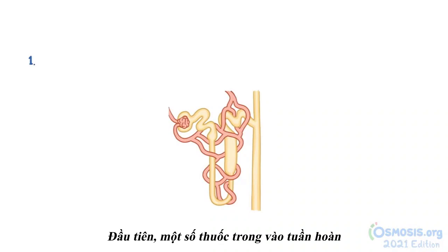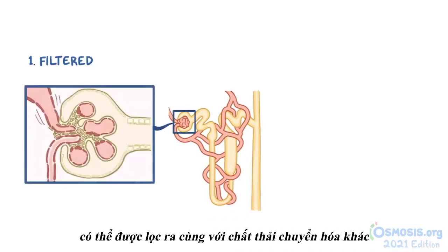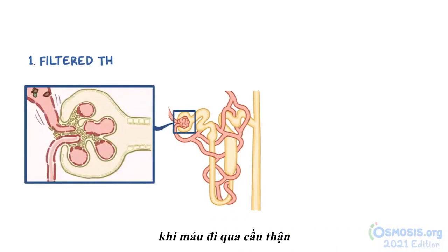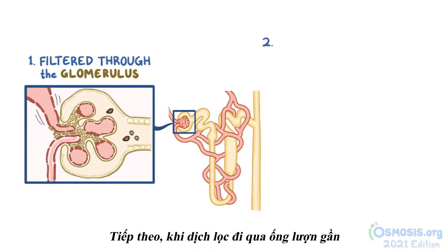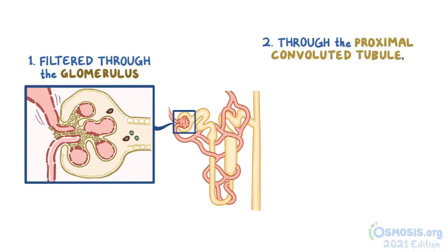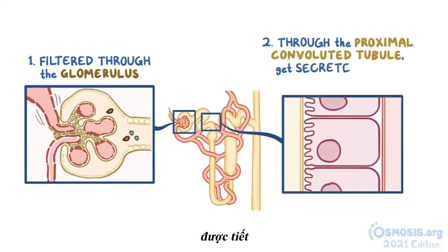First, certain medications in the circulation can be filtered out with other metabolic wastes when the blood goes through the glomerulus. Second, as the filtrate makes its way through the proximal convoluted tubule, certain medications from the paratubular capillaries get secreted into the tubular lumen.